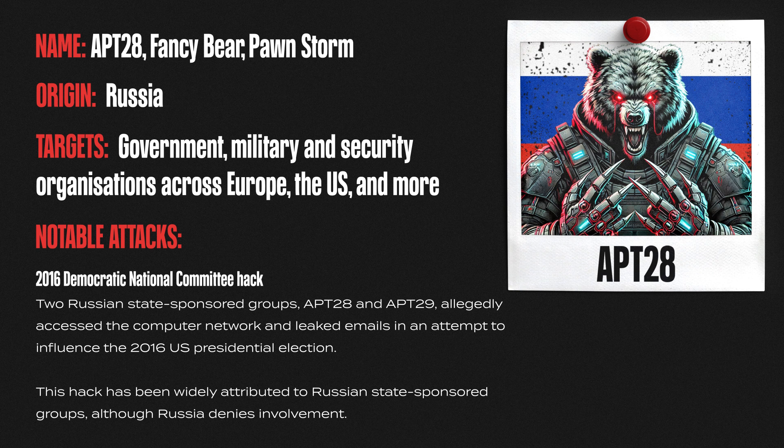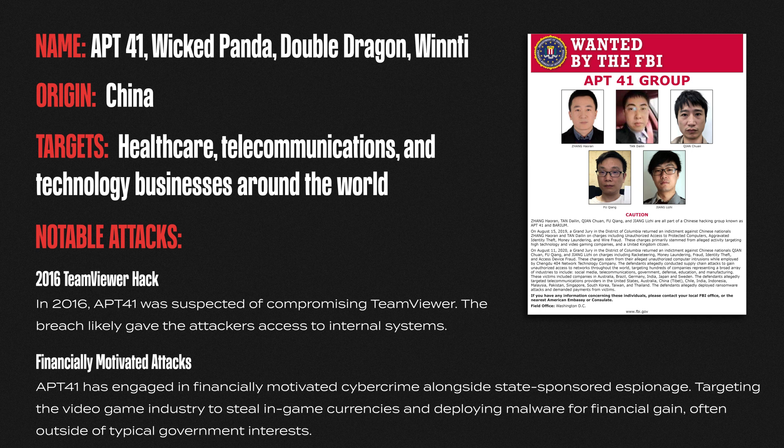Another APT example is APT 41, also known as Wicked Panda, Double Dragon and Winty. This group is suspected to be sponsored by the Chinese government. Their espionage activity has targeted healthcare, telecommunications and technology businesses around the world. The FBI have issued arrest warrants for five individuals linked to this group, and they are believed to be responsible for a hack on TeamViewer, a popular remote access tool.